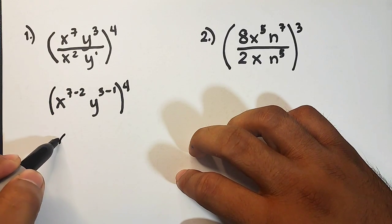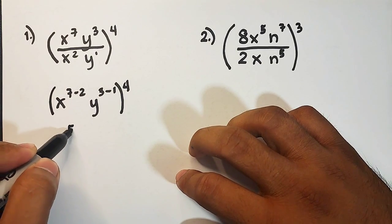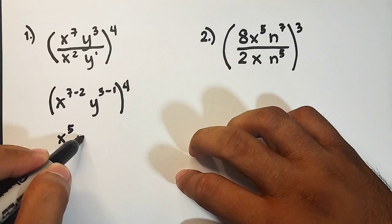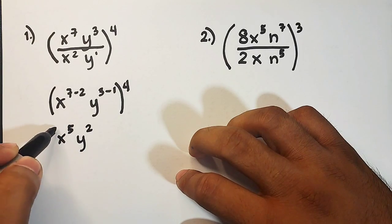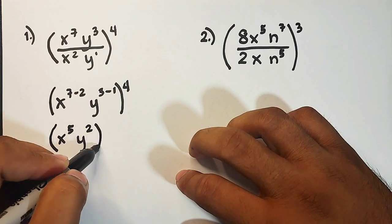And then don't forget to enclose it by the original exponent outside. Simplify, you have x raised to 5, then y raised to 2, and then enclose it by parentheses and then put your exponent.